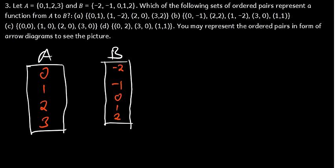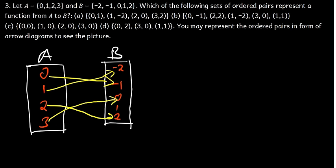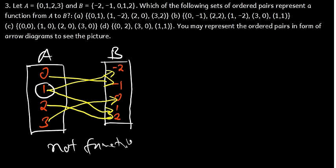For part B, the ordered pairs include {0, -1}, {0, -1}, {2, 2}, {1, -1}, {-2, 2}, {1, -2}, {3, 0}, {1, 1}. Here the element 0 in A is giving two different output values, meaning one input has two outputs — which is not possible. So this is not a function because there should be only one output for each input.